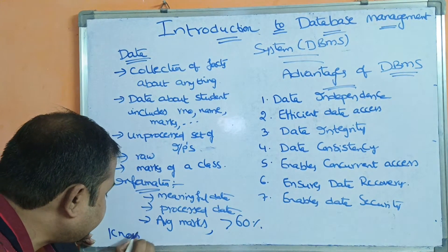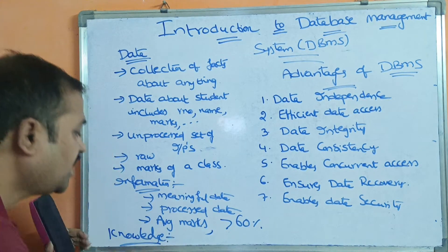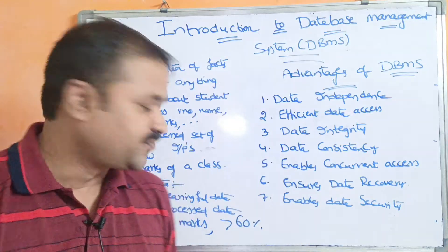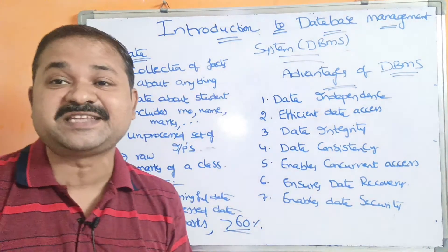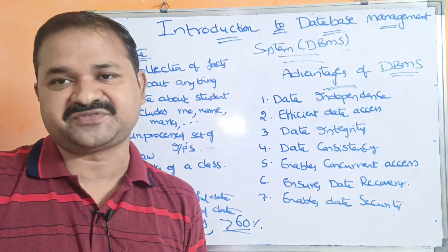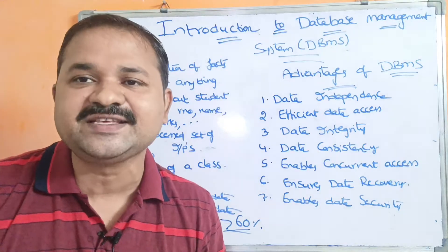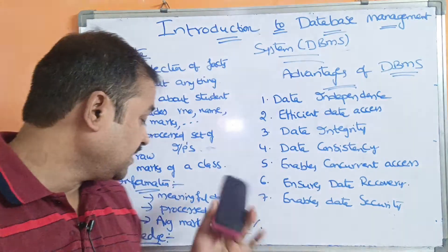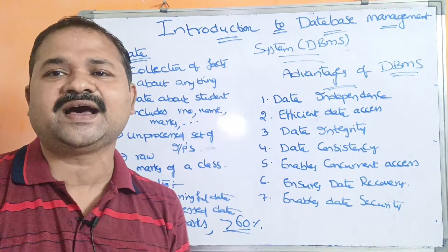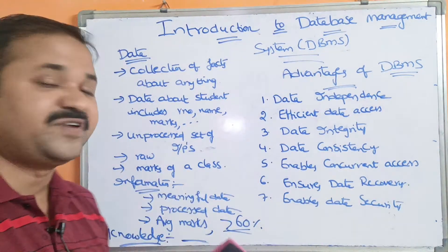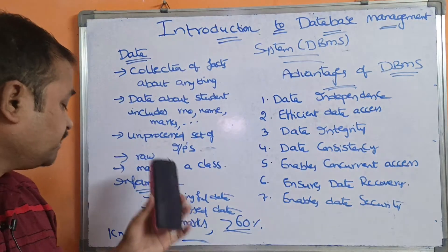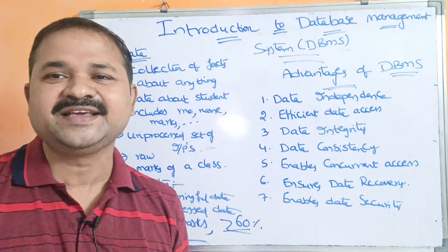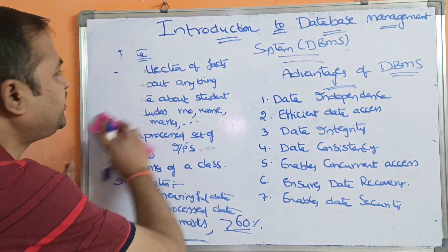The next terminology is knowledge. Knowledge means making use of the information. For example, students who got greater than 60 percent are eligible for placement drives, and those below 60 percent are not. So knowledge means using information to decide results.